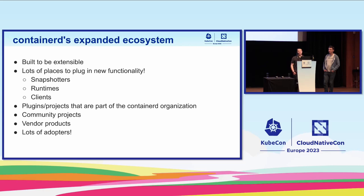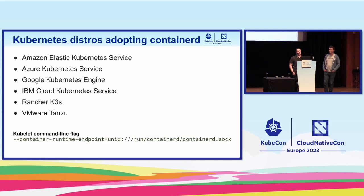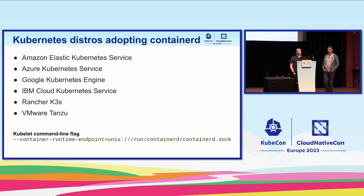The ContainerD project hosts some extensions — core extensions included by default with the same stability and support model, and non-default core extensions that don't have the same lifecycle. There are also community projects and vendor products built on top of ContainerD. We've seen really great adoption in the ecosystem. One of them, of course, is Kubernetes — many of you will have heard that Kubernetes 1.24 removed Docker Shim. ContainerD is a well-supported runtime that can be used in its place, and many popular Kubernetes distributions are either adopting ContainerD now or have already adopted it.